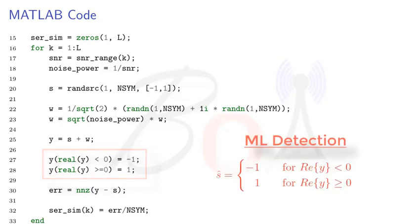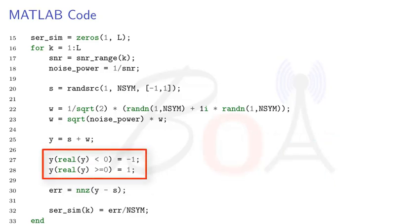We will now perform maximum likelihood detection to recover the transmitted information symbols from the received symbols Y. In ML detection of BPSK signal, if the real value of the received symbol is less than 0, then symbol minus 1 is detected. The ML detection is performed using these two commands. This command first finds the indexes of all the symbols whose value is less than 0 and replaces the corresponding value in vector Y with minus 1.